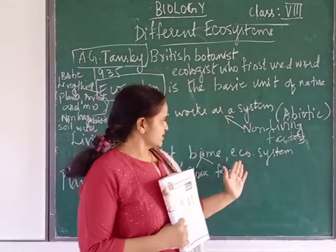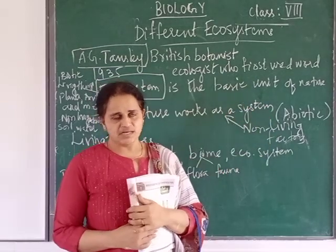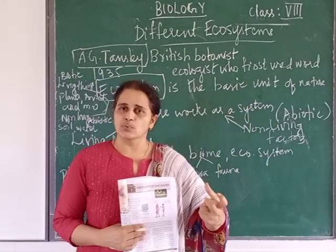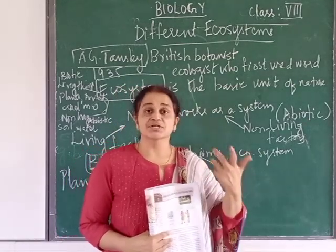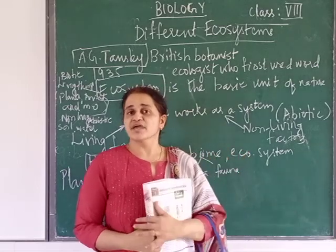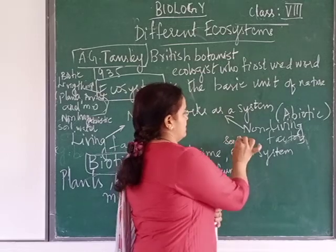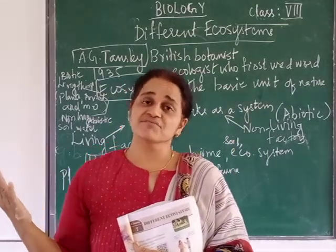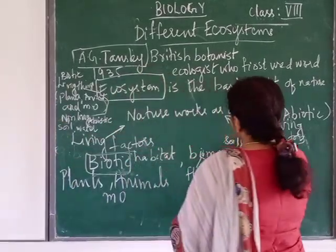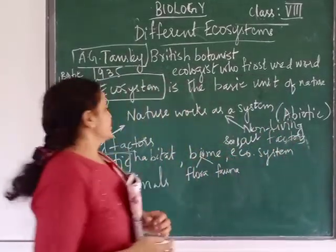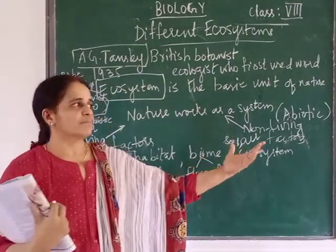Abiotic factors are the non-living factors. For example, for a plant to grow, it needs nutrients from the soil, and it takes oxygen from the air. So soil and air are examples of abiotic, or non-living, factors.